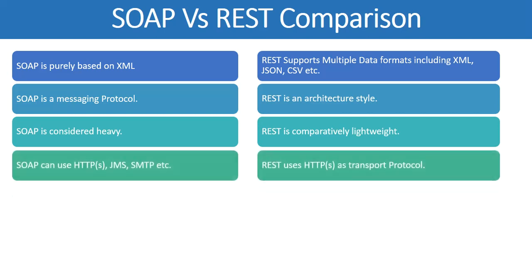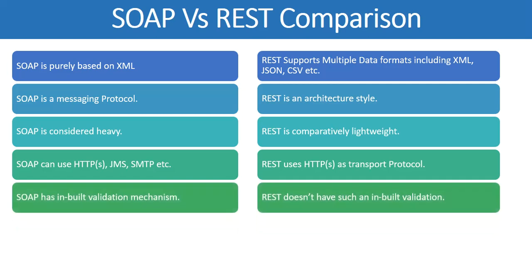The next difference is about transport protocols. SOAP has the flexibility of using different protocols for transporting messages between client and server — we can use HTTP, HTTPS, JMS, SMTP, etc. But RESTful web services are limited to HTTP and HTTPS only, so we cannot use the other types of protocols available in SOAP.